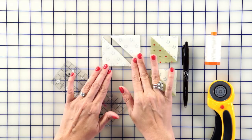Cut in the center, and you have two. Press towards your green, and you're going to make four half square triangle units for each block.